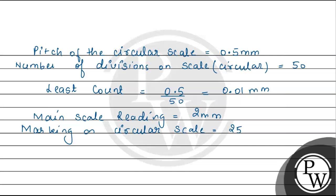So diameter of the sphere, that will be equals to main scale reading plus marking on circular scale n into least count. So this is 2 plus 25 into least count 0.01. So, this will be equals to 2 plus 0.25.